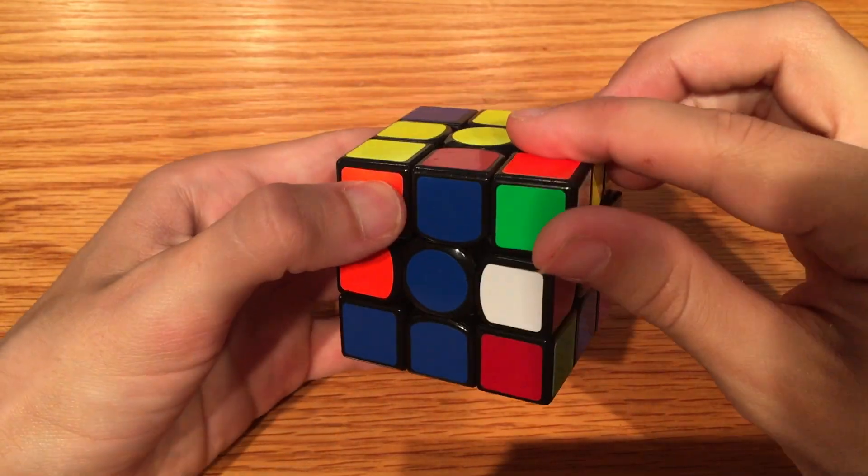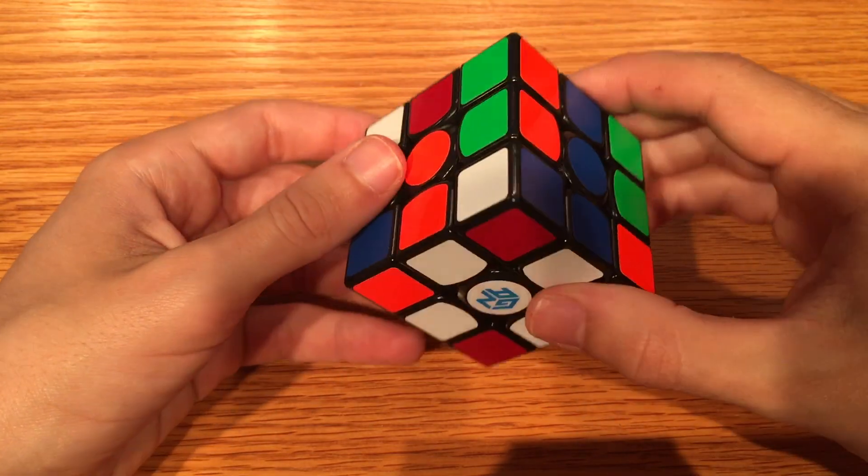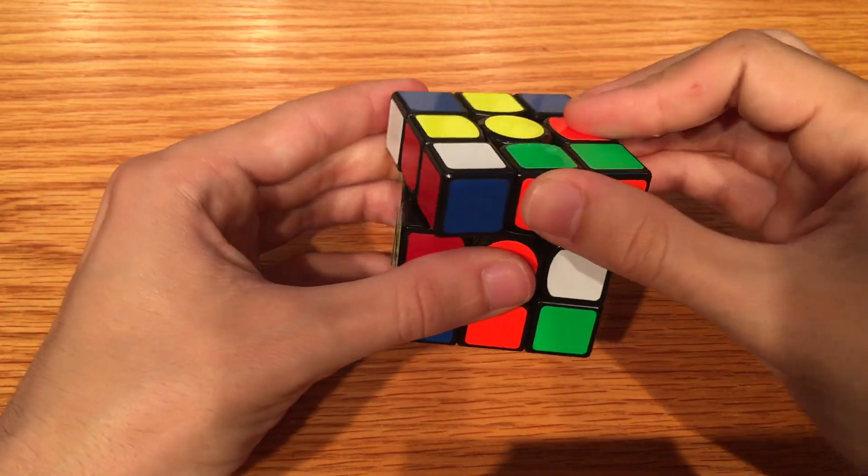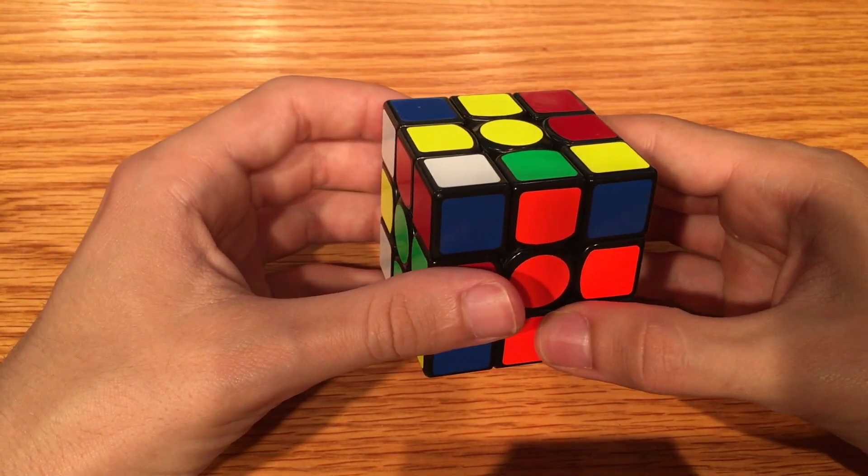We messed up our cross piece, so we're going to put that back down. Same with the corner. We throw it up, move it out of the way. We messed up our cross piece, so we put that back down.